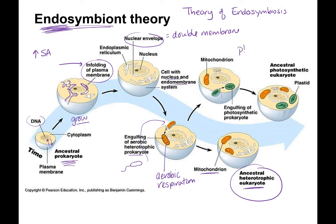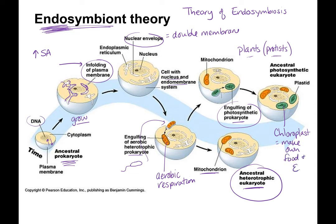For plants and some protists — like amoeba and paramecium, and euglena which is a photosynthetic protist — they were able to take in a photosynthetic prokaryote, which became the chloroplast. So they were now able to make their own food and energy through photosynthesis. You get a chloroplast in there, and now we had photosynthetic cells that could make their own sugars and their own energy.